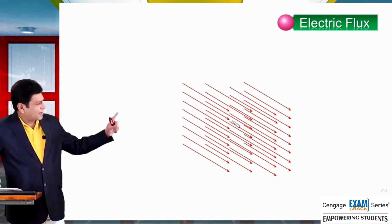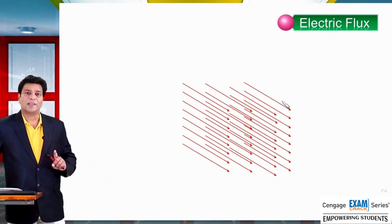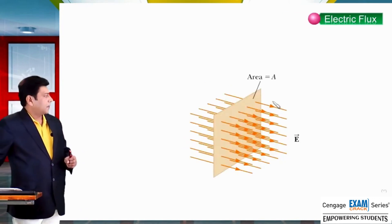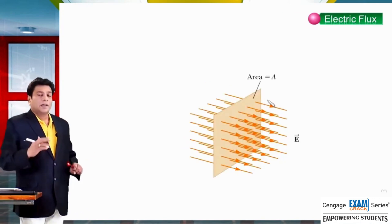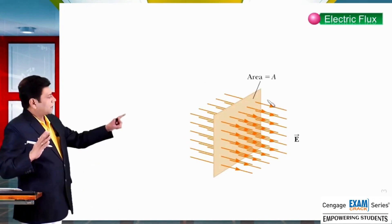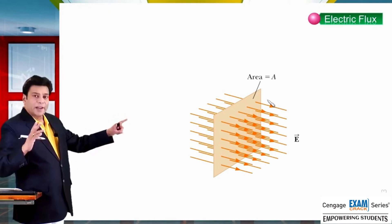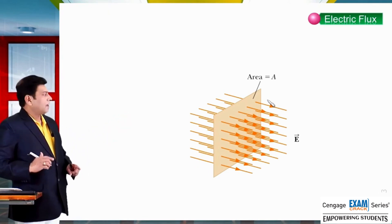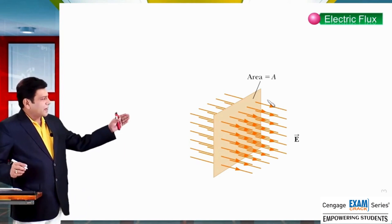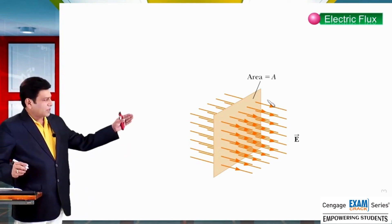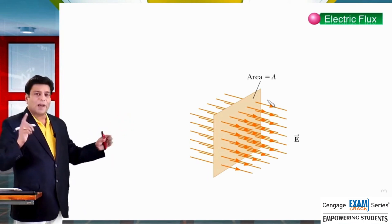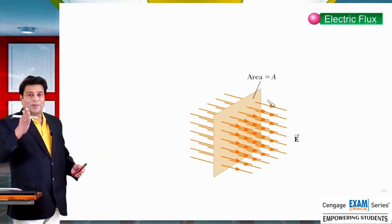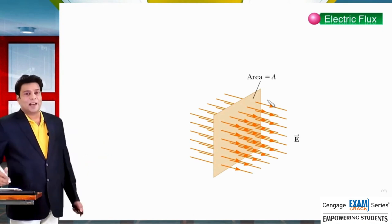Now let us place a rectangular surface in the path of electric field lines. You can observe this surface is having area A. The area vector of this surface and the electric field are parallel, or you can say the surface is perpendicular to the electric field.